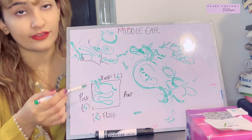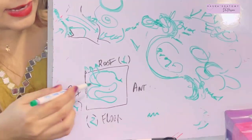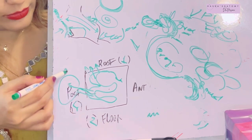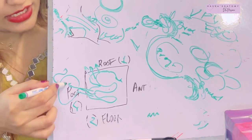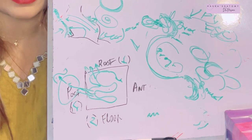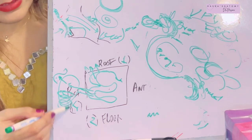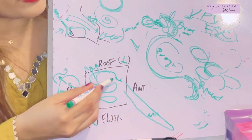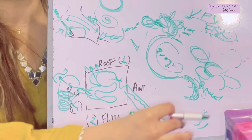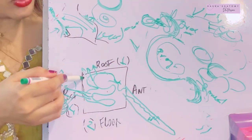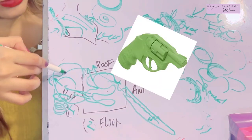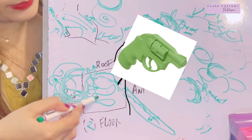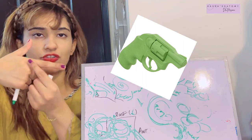Infection spreading through the posterior wall via the aditus into the mastoid antrum can cause thrombosis of the sigmoid sinus or an abscess in the mastoid bone. Through the anterior wall, infection can travel via the auditory tube to the nasopharynx — or nasopharyngeal infections can spread into the middle ear.